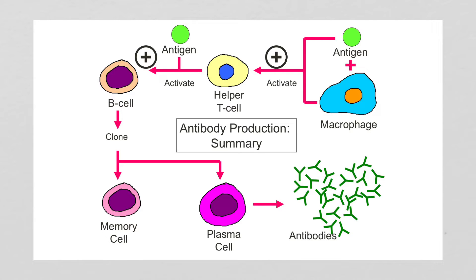The production of antibodies begins when a macrophage ingests a pathogen and presents its antigen on its cell surface. This activates a helper T cell, which then presents the antigen to a B cell and activates it. The B cell makes clones of itself and produces plasma cells, which generate large quantities of antibodies. Some of those cells become memory cells that linger in the immune system — in the bone marrow — ready to fight the same antigen if encountered again.